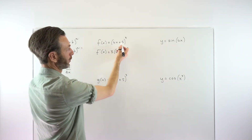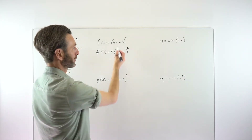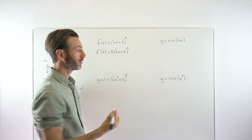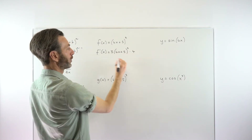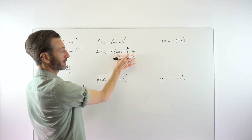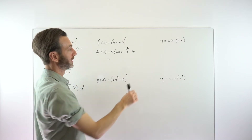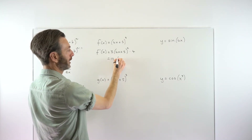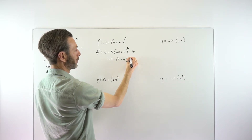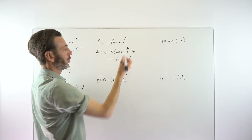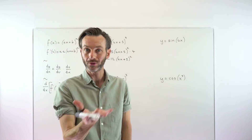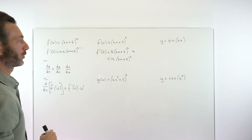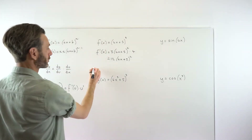The u is the four x plus five, so we need to differentiate that — it's just a linear function, and the derivative of four x plus five is four. So we multiply by four. Tidying up, three times four gives 12, so we get 12(4x+5)^2. This form is very common for the chain rule, but it's only one example of a range of different versions.